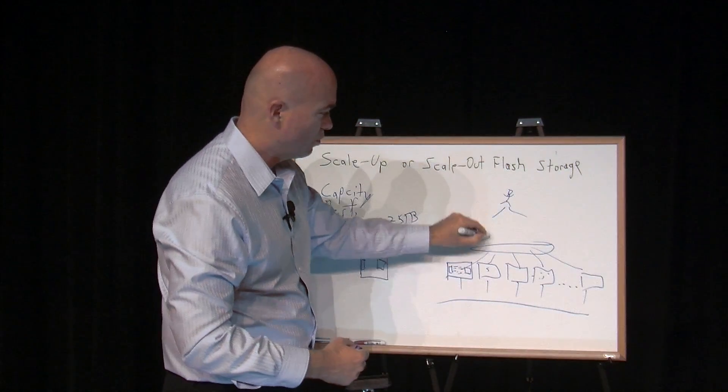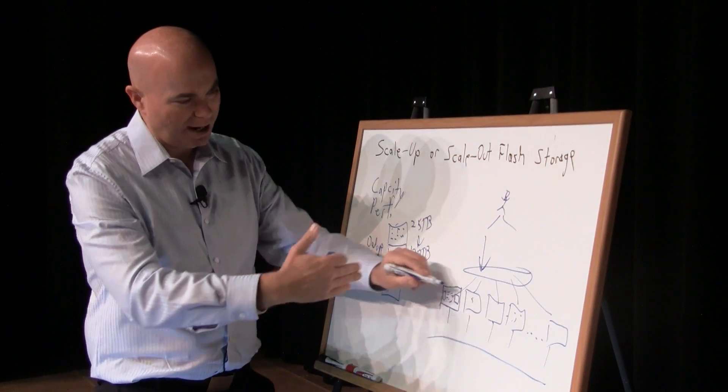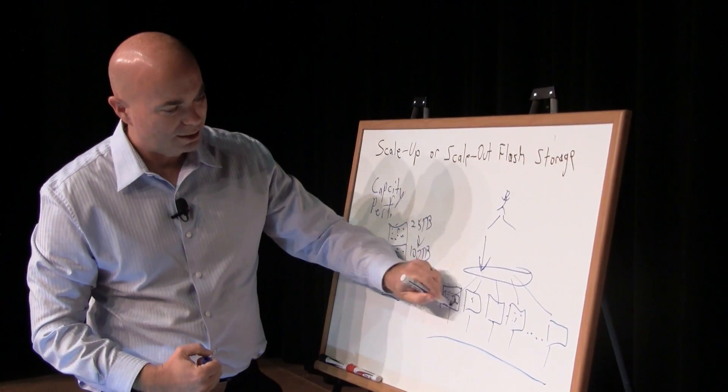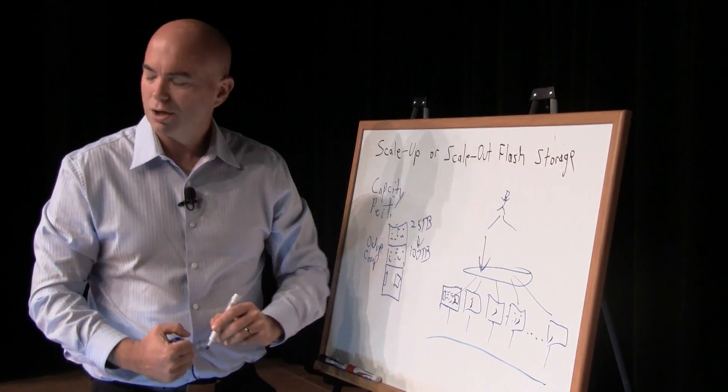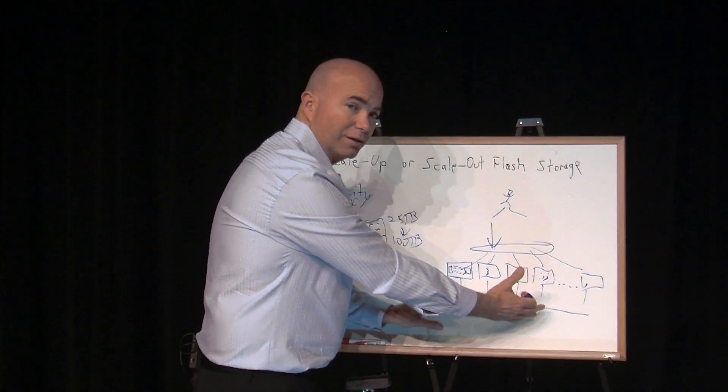So as an example, if we write data to this cluster, we actually then have to break up that data and then stripe it across all the nodes in the cluster. That requires a lot of back-end communication and things like that.